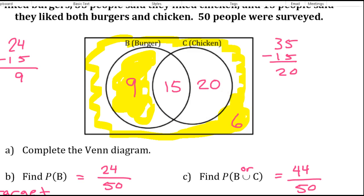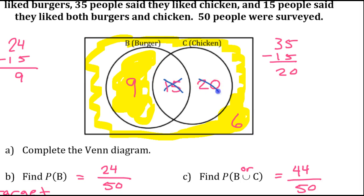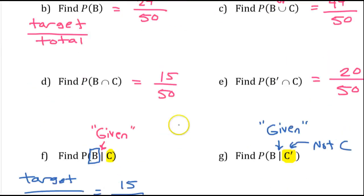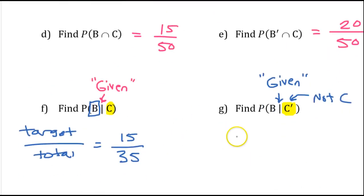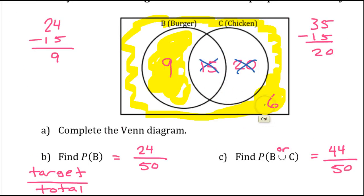People who don't like chicken. And, then we're supposed to cross out everything else. So, we're going to cross out the 15 and the 20. And, now we can do the probability target over total.